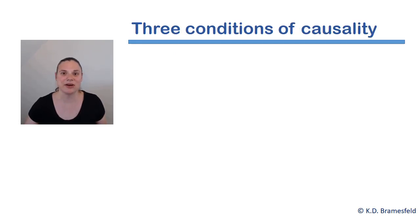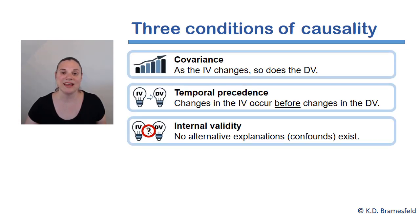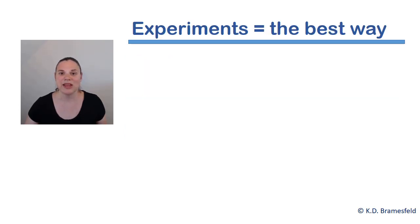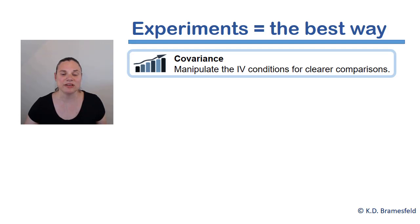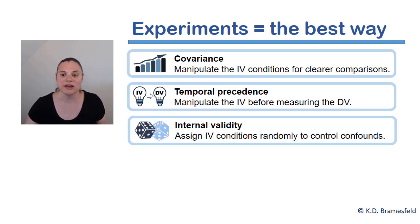You may recall from our earlier discussions that there are three conditions of causality: covariance, temporal precedence, and internal validity. You may also recall that experiments are the best way to establish these three conditions of causality. By manipulating the IV conditions, the experiment creates clear conditions for comparisons. By manipulating the independent variable before measuring the dependent variable, an experiment establishes temporal precedence. And by assigning people to the IV conditions randomly or through some kind of unbiased method, this controls for confounds and meets the condition of internal validity.